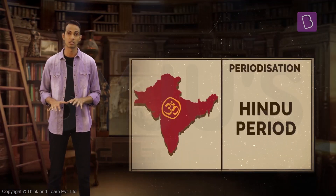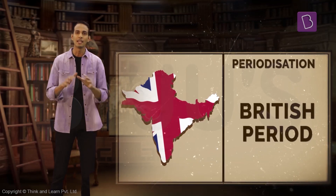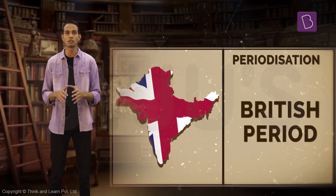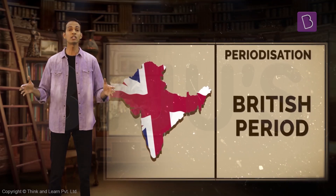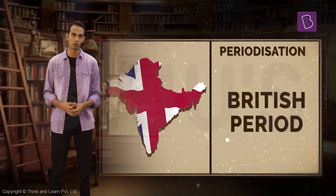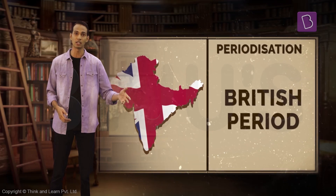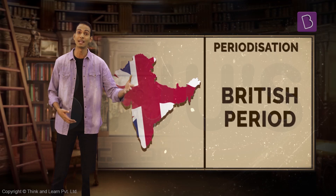And guess what? He was pretty ill-informed. In his book, James Mill subdivided Indian history into three periods: Hindu, Muslim, and British. He based his periodization on what he thought was the best way to divide the history of India — based on the religions of the rulers. And of course, the British part of his periodization was to justify and lord their presence in India.